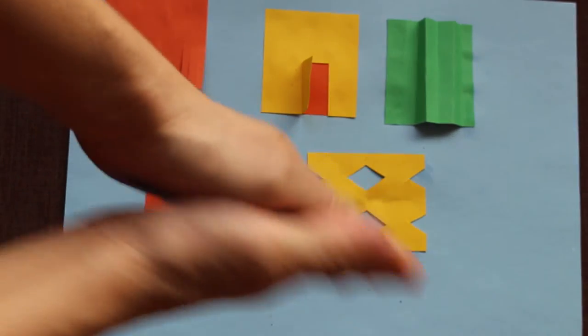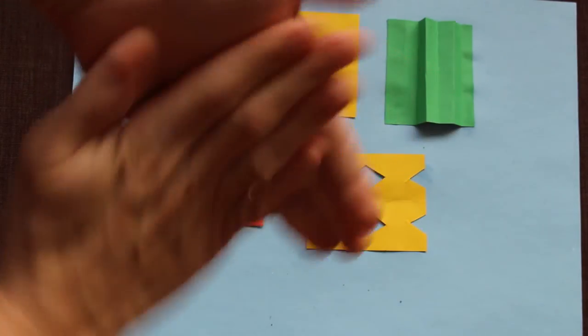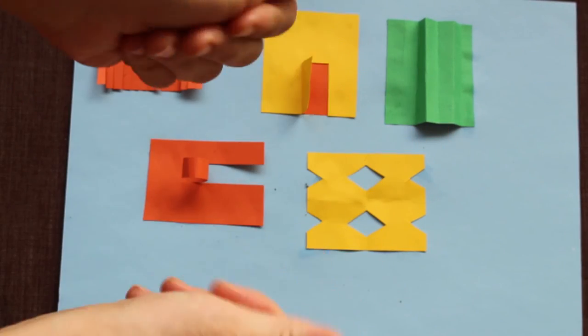If you get glue on your hands, don't worry. Just rub your hands together. The glue will quickly dry and come right off.